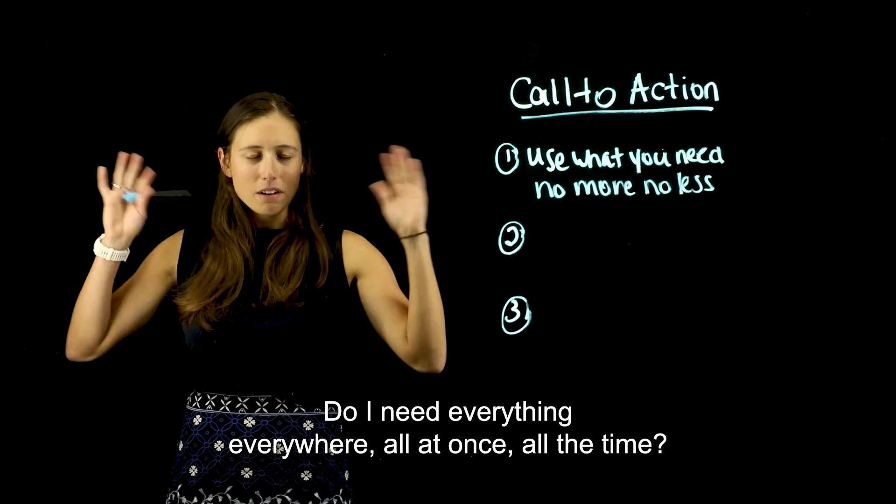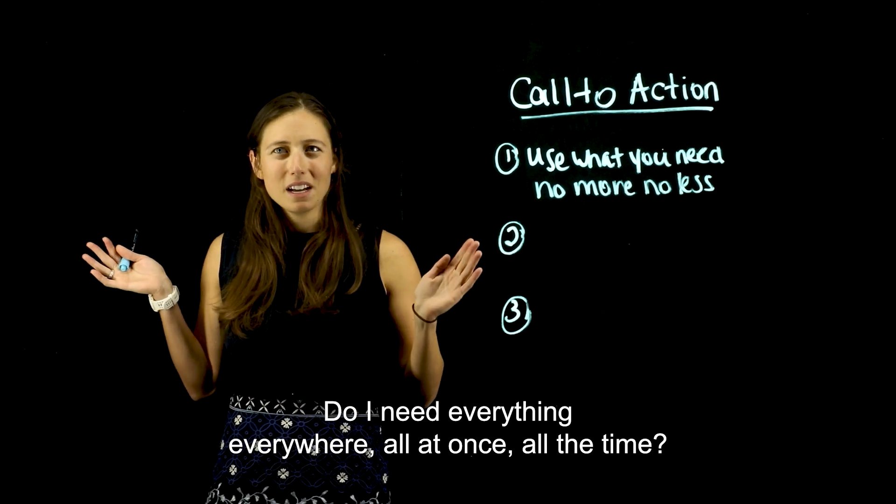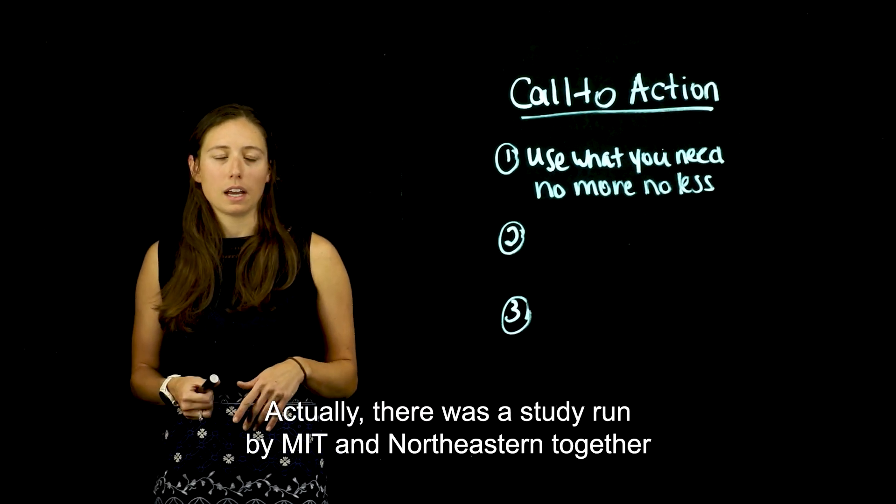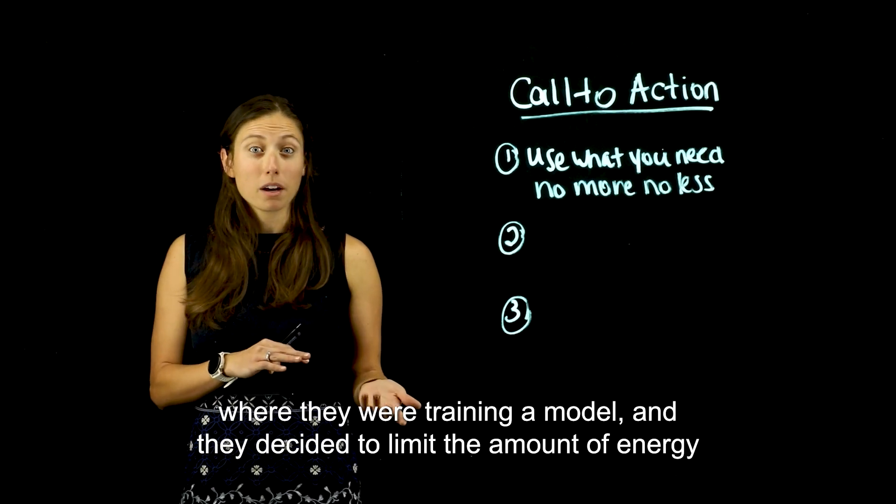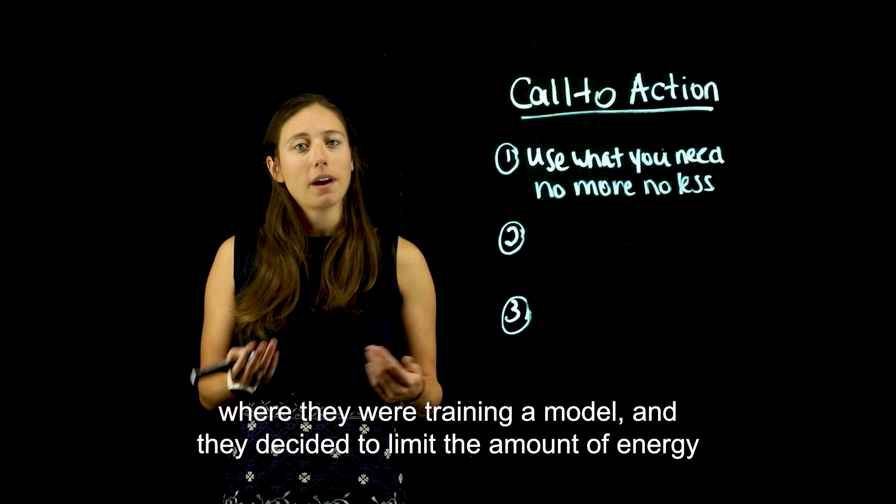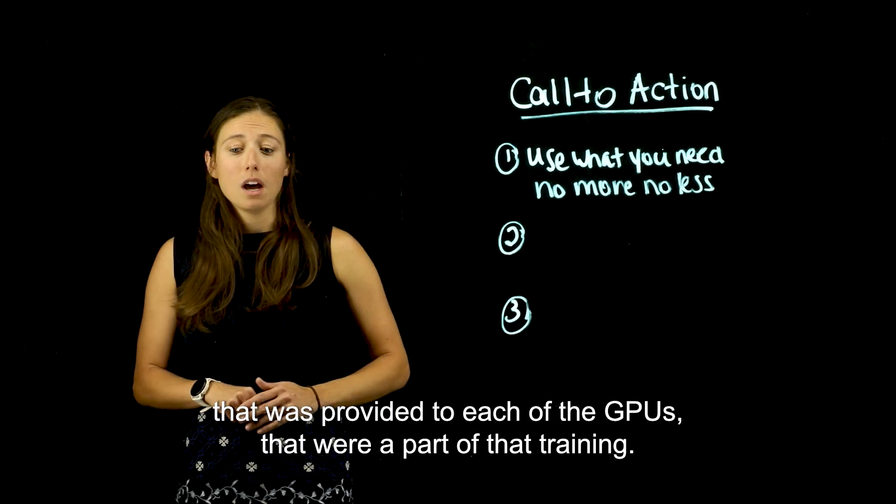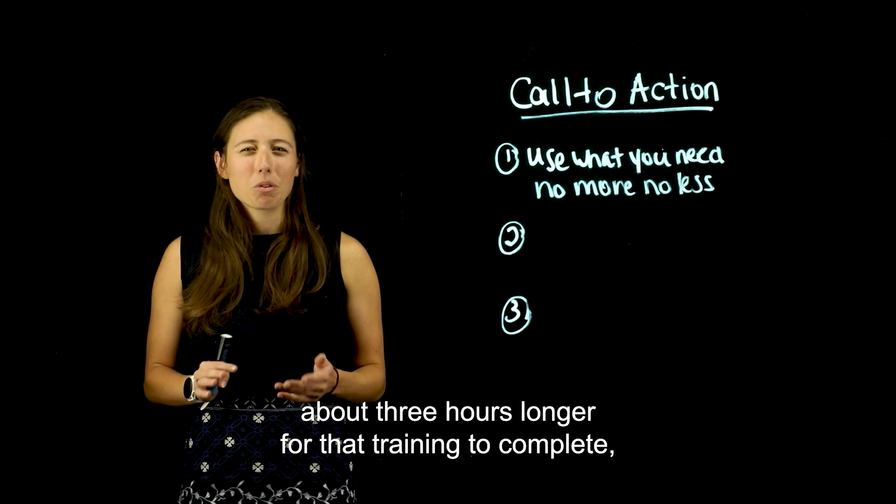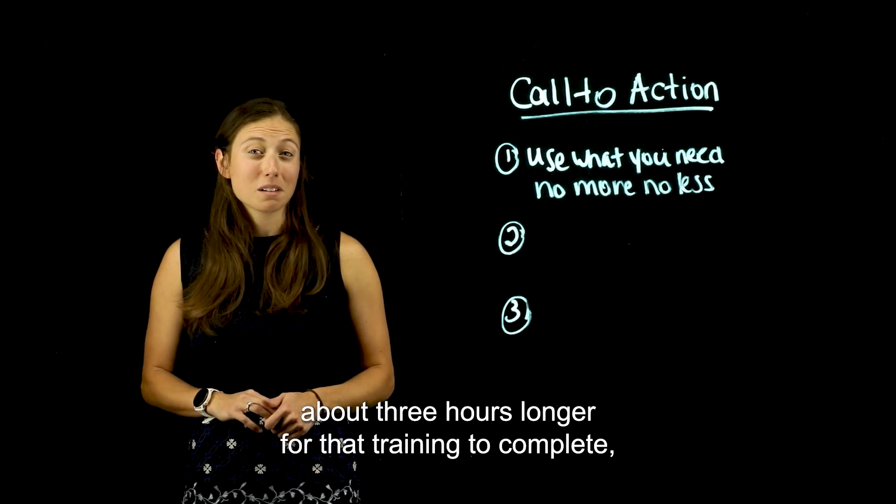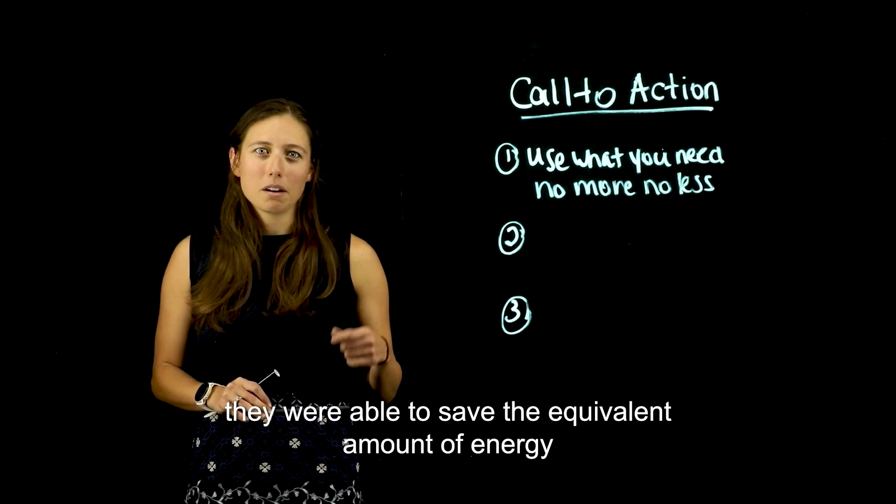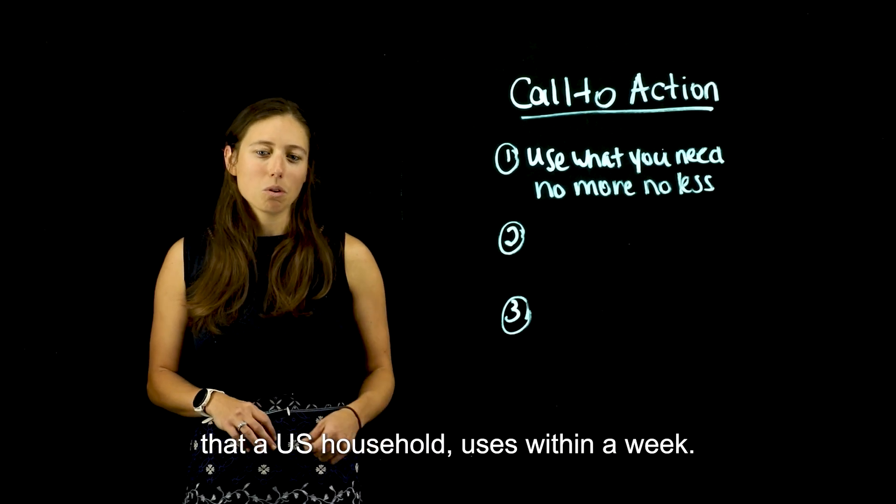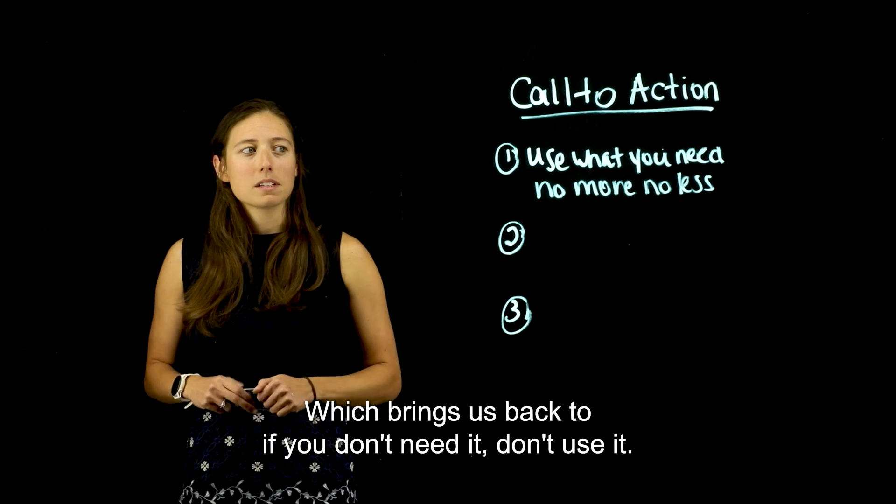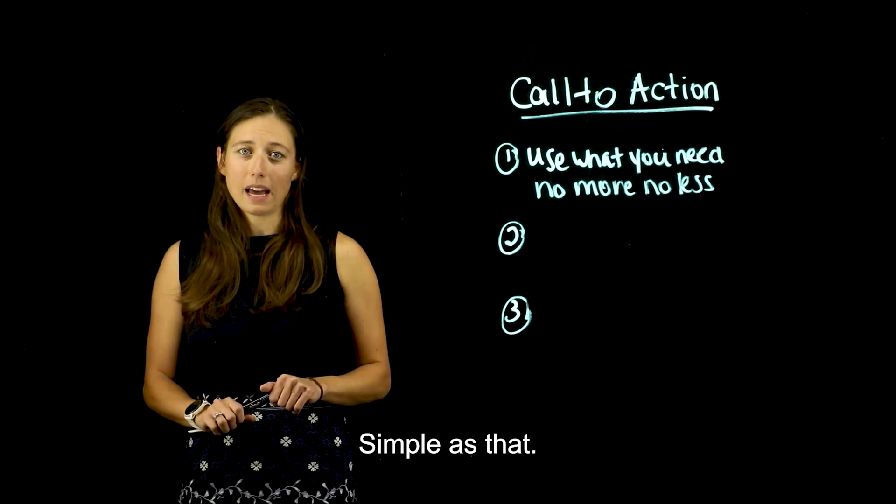So what do I mean by that? Do I need everything, everywhere, all at once, all the time? Maybe not. Actually, there was a study run by MIT and Northeastern together where they were training a model, and they decided to limit the amount of energy that was provided to each of the GPUs that were a part of that training. And what they found was even though it took about three hours longer for that training to complete, they were able to save the equivalent amount of energy that a U.S. household uses within a week. So that was a huge energy savings, which brings us back to if you don't need it, don't use it. Simple as that.